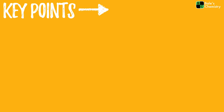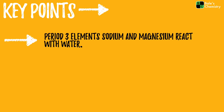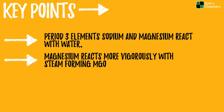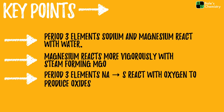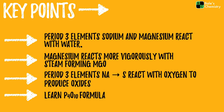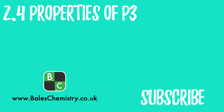Let's wrap up with some key points. Period three elements sodium and magnesium react with water — magnesium reacts more vigorously with steam to form magnesium oxide rather than magnesium hydroxide. Period three elements sodium through to sulfur react with oxygen to produce oxides. Remember: sodium burns yellow, sulfur burns blue, and all the rest burn white. It's really important to learn the P4O10 formula, as without it you'll struggle to answer equations relating to phosphorus oxide. Thanks for watching Bale's Chemistry — subscribe below and head to baleschemistry.co.uk for question practice.